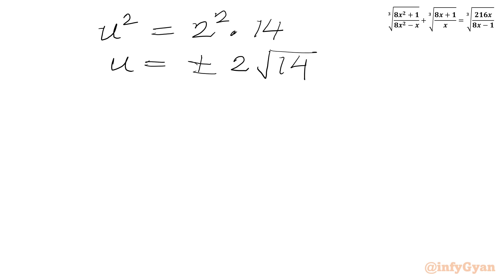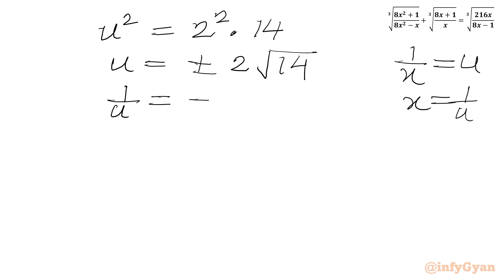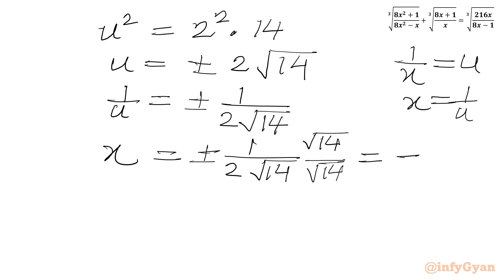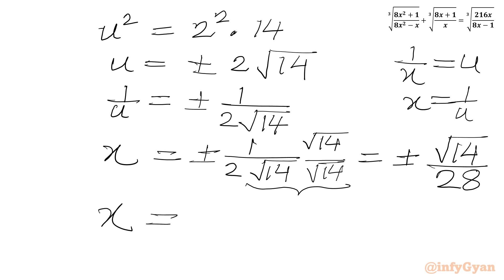This is our u. Now we have to find x, and 1 over x was u. So I can write x equal to 1 over u. Taking the reciprocal of both sides: x equal to plus or minus 1 over (2 times square root 14). Multiplying numerator and denominator by square root 14, we get plus or minus square root 14 over 28. So our final answer is x equal to plus or minus square root 14 over 28.